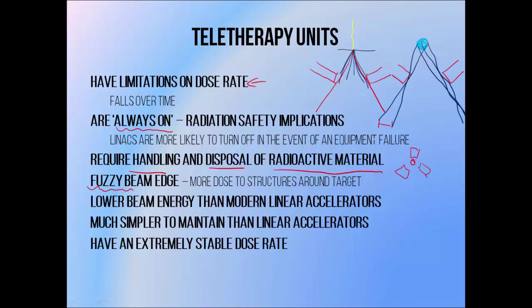While teletherapy units produce a high-energy beam for their time, these beams are of significantly lower energy than those produced by modern machines, so they're not as efficient at delivering dose at significant depths within a patient. On the plus side, linear accelerators — the radiotherapy machine of choice across much of the world — are extremely complicated, while teletherapy units are not. This makes cobalt machines much easier to maintain, making them a better choice for departments in parts of the world where maintenance could be problematic. They also have a very stable dose rate, which makes them very useful in the calibration of dose measuring equipment.